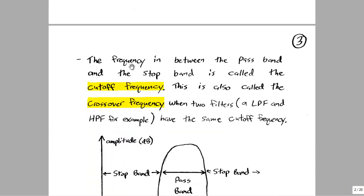The frequency between the pass band and the stop band is called the cutoff frequency. If you have two filters with the exact same cutoff frequency, for example a low pass filter and a high pass filter, this is also called the crossover frequency.